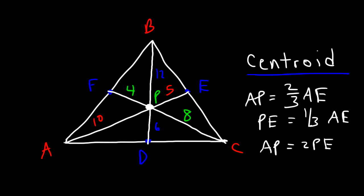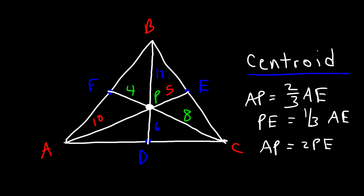The total length of AE is 10 plus 5, that's 15. We can see that AP is two-thirds of 15, which is 10. PE is one-third of 15, which is 5. Anytime you have a centroid, the long segment will be twice the value of the short segment.